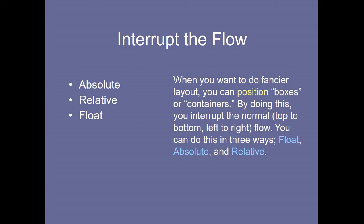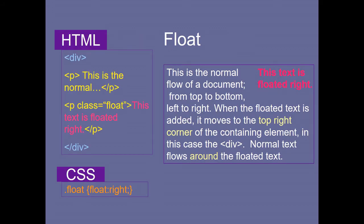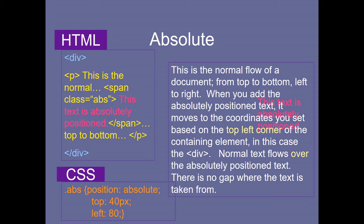Float: the normal flow of the document goes top to bottom, left to right. When floated text is added — for example, a paragraph with class 'float' — it moves to the top-right corner of the containing element. In the code, you have one division, then one paragraph, then a floated paragraph. By default, the floated element goes to the top-right corner, and normal text flows around it.